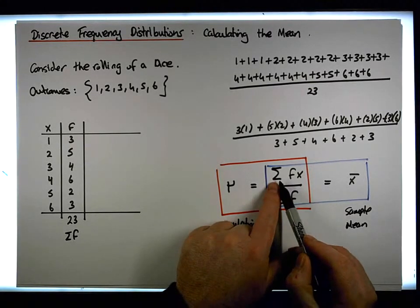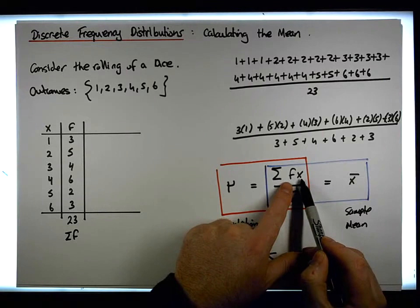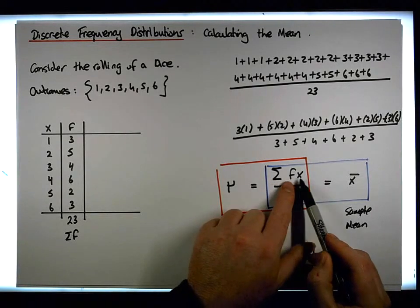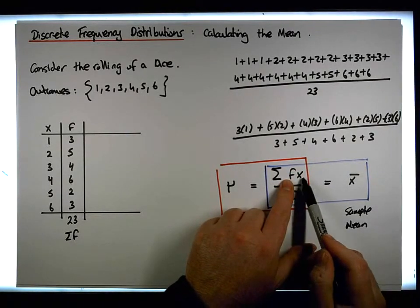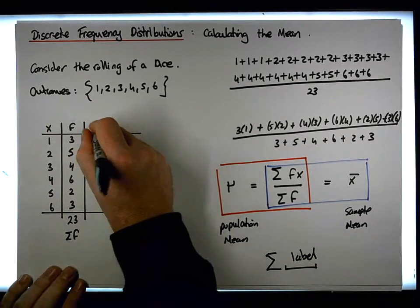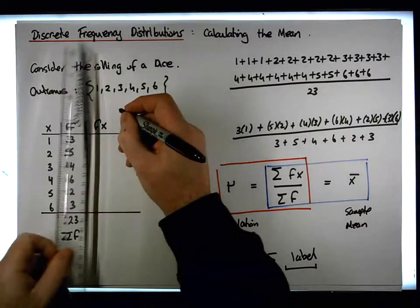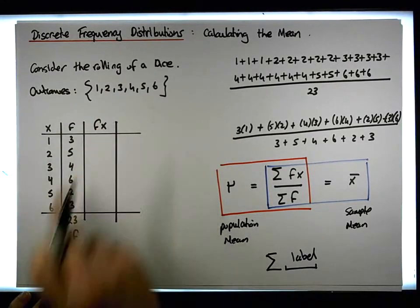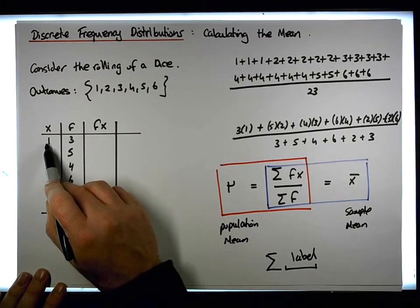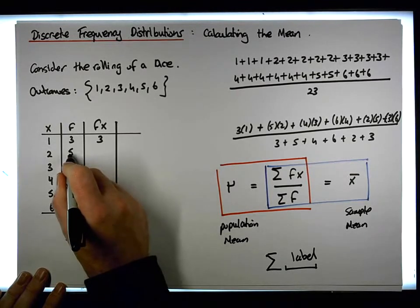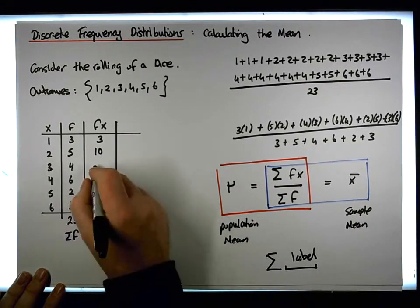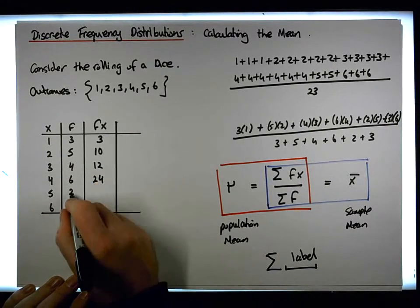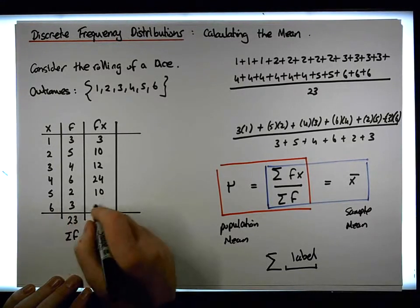What about the numerator? It's sigma fx. The label is fx, so we need a column in our table with that label. To have a column called fx, we need columns called f and x already, which we do. So we create a new column called fx, which is the product of the frequencies and the observations. So: 3 times 1 gives us 3, 5 times 2 gives us 10, 4 times 3 gives us 12, 6 times 4 gives us 24.